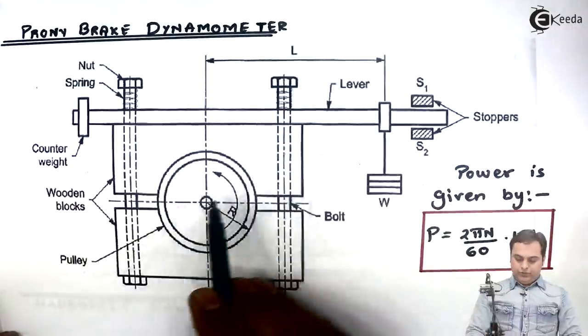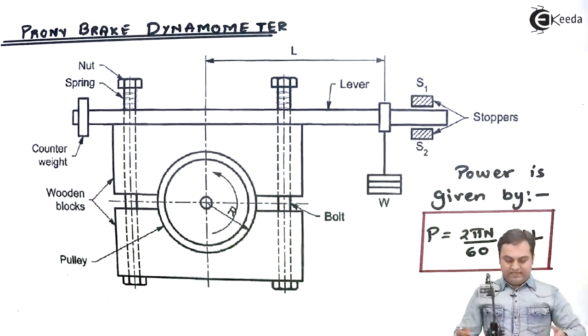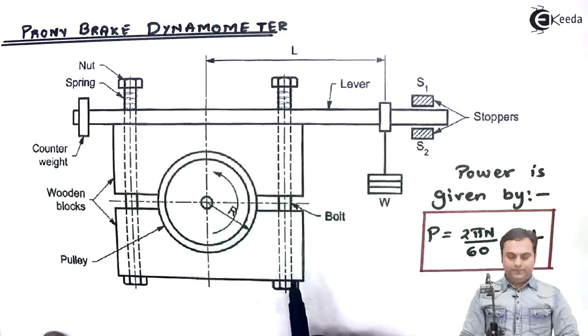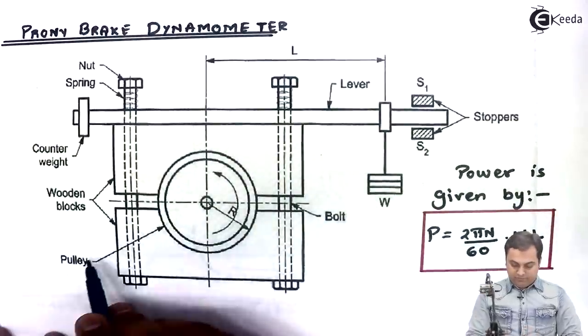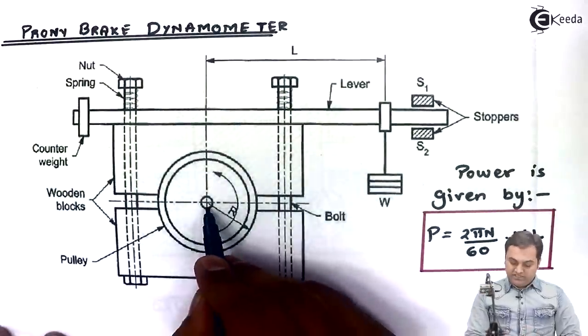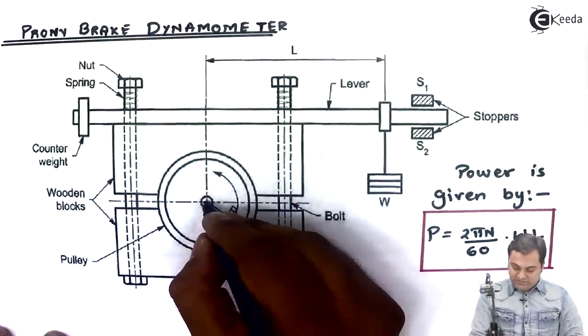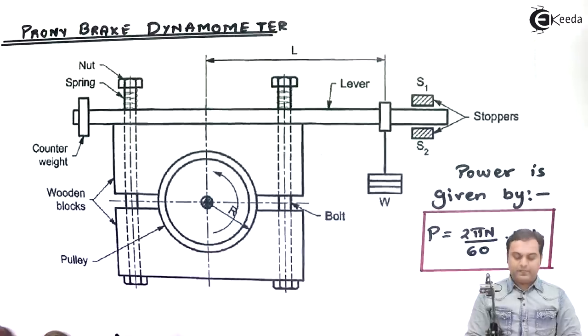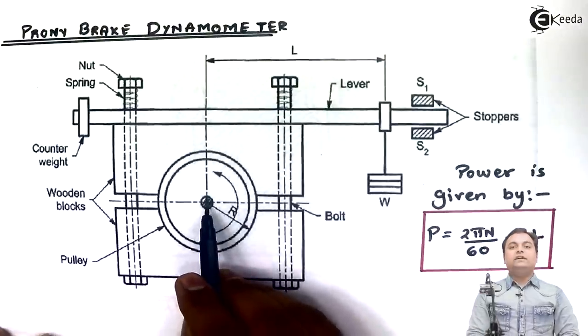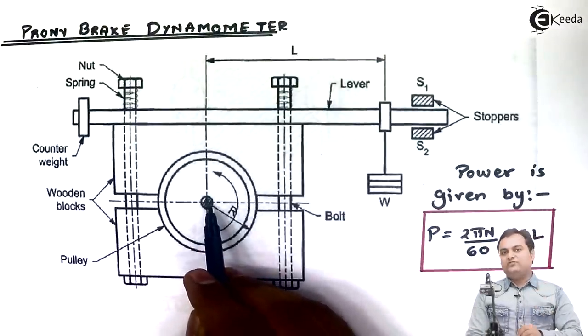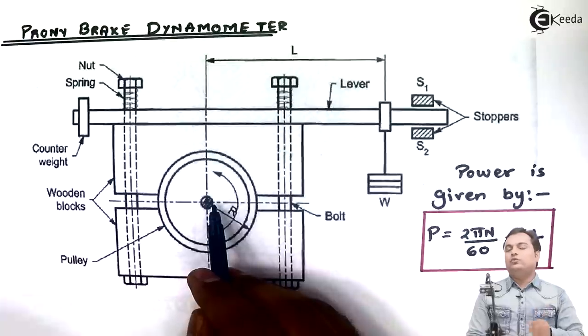Here I have the diagram of a Prony brake dynamometer. It consists of a pulley which is attached to the shaft. At the center we have a shaft, this shaft is the shaft whose power we want to measure.